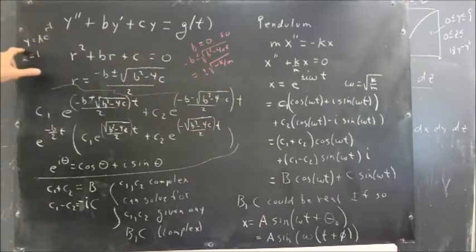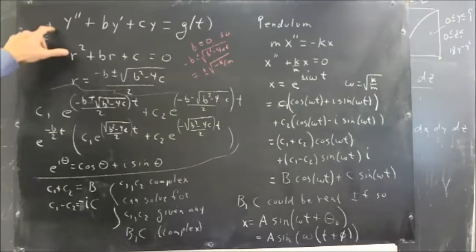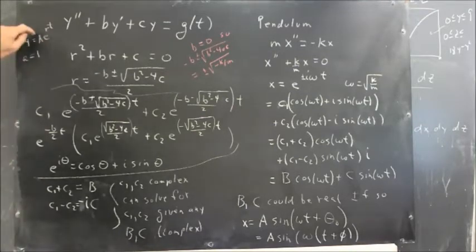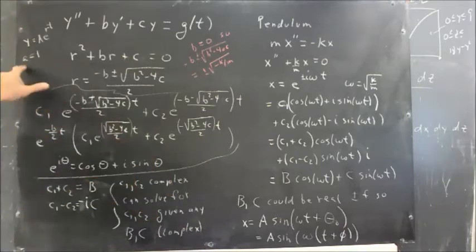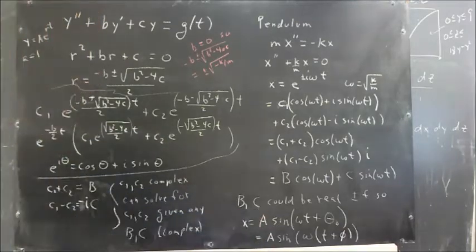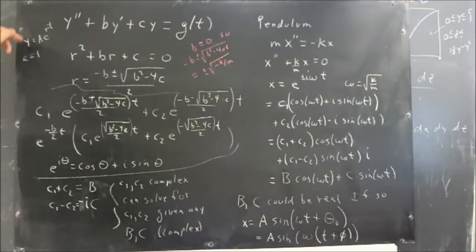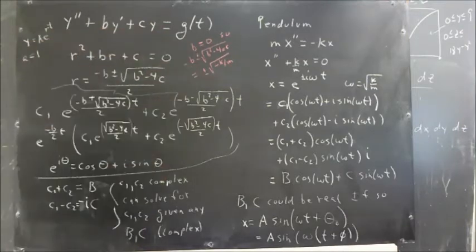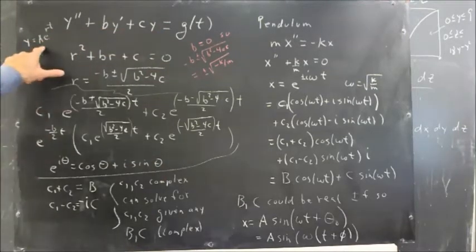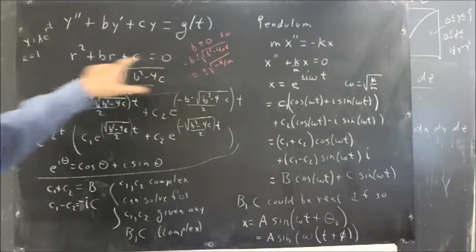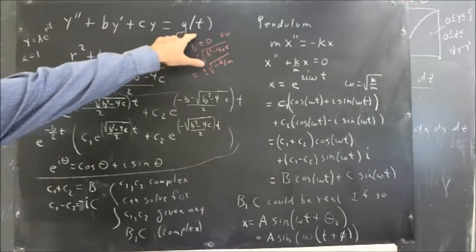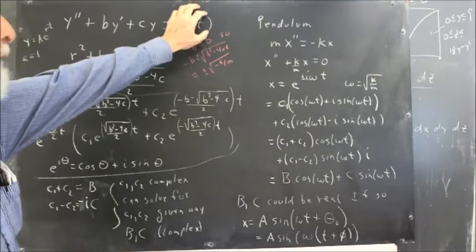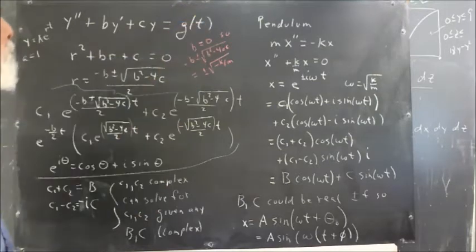So we make the assumption y equals some multiple of e to the rt. The a I've got here has nothing to do with this a or the a I'm going to get down here. Or we just say y equals e to the rt and understand that any constant multiple of that function is still going to be a solution to the equation. We make that substitution and solve the homogeneous equation where we ignore the g of t. We solve the equation equal to zero.